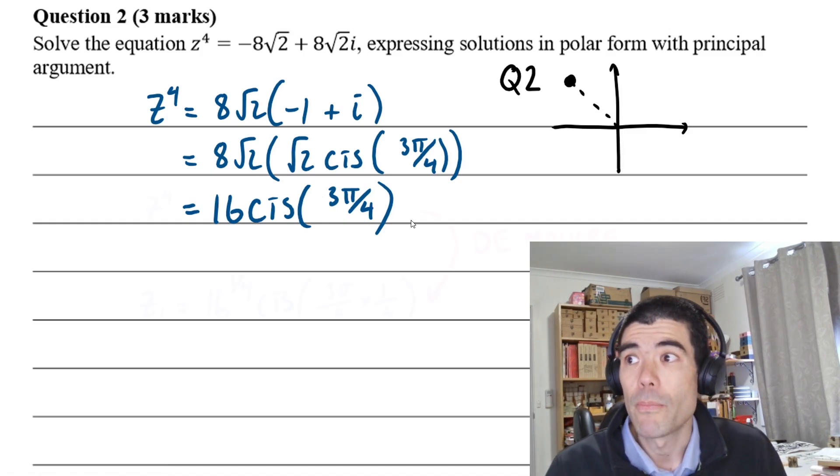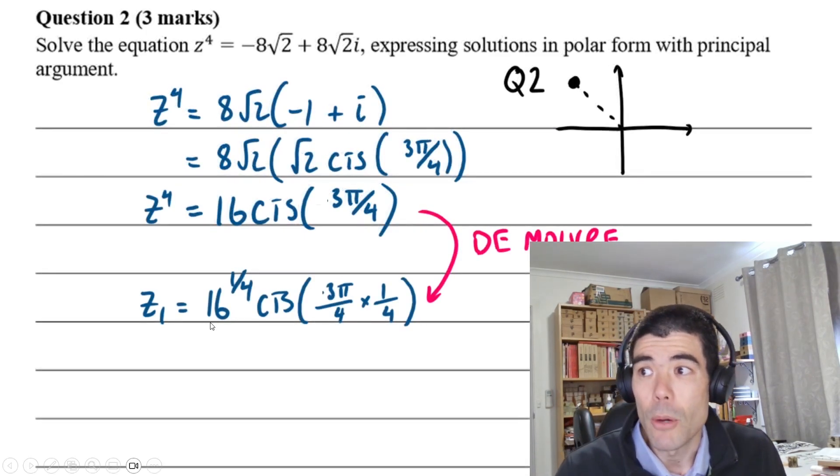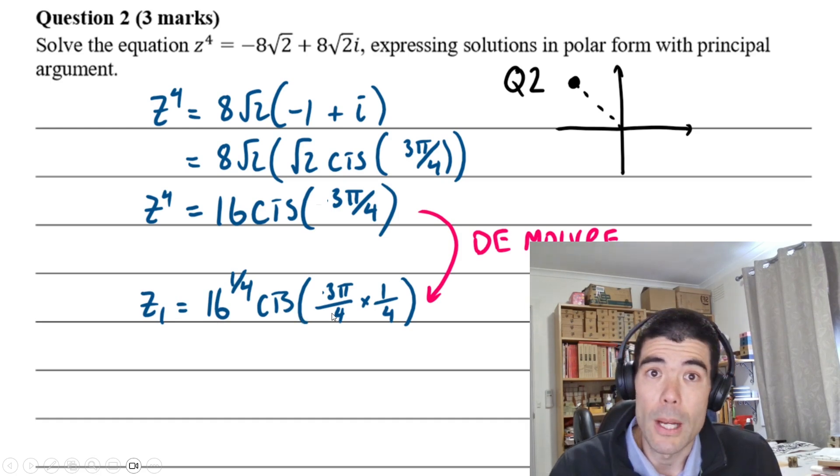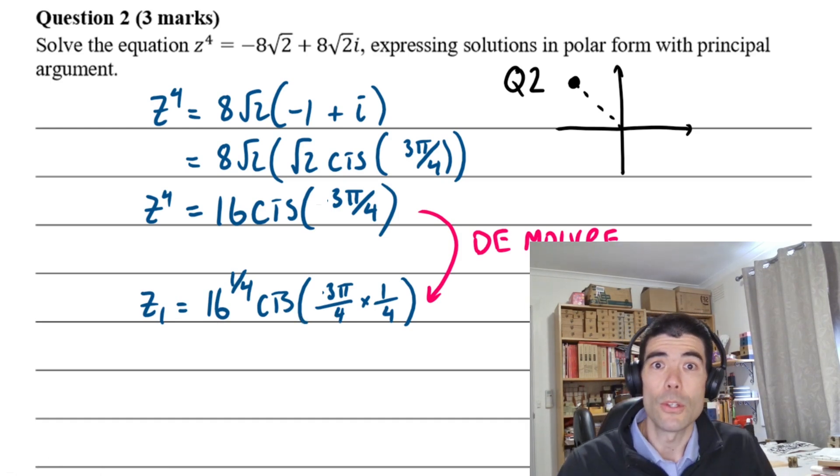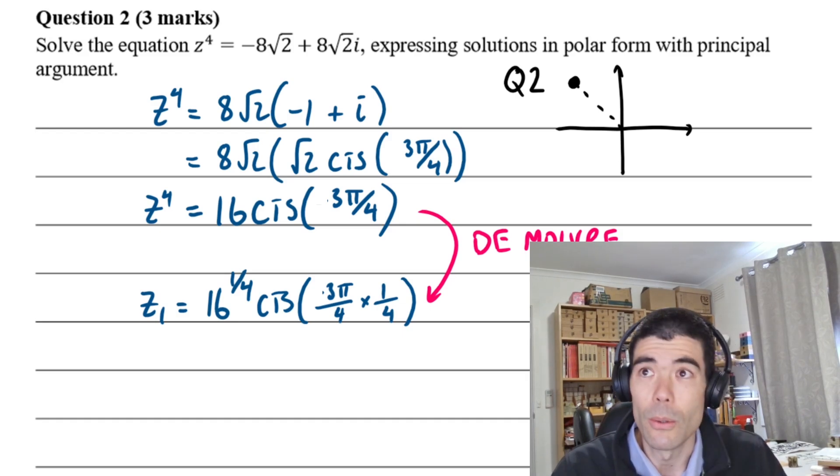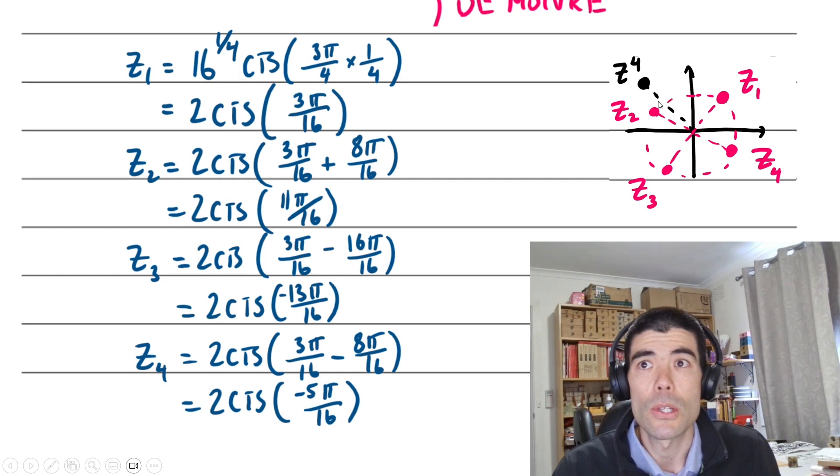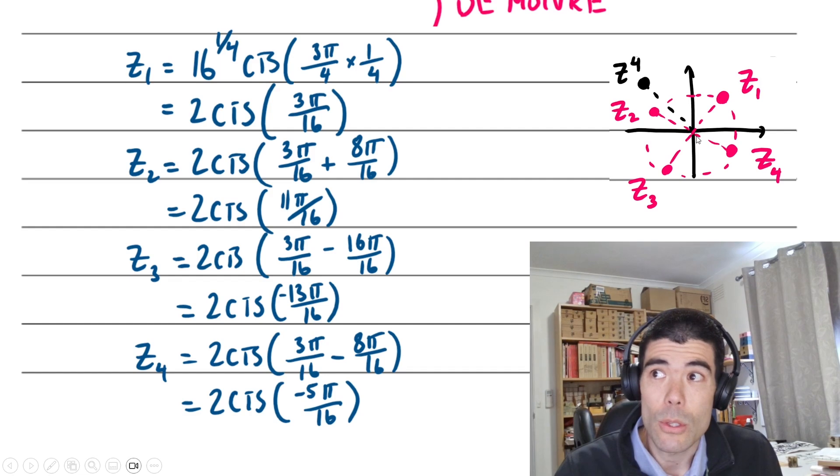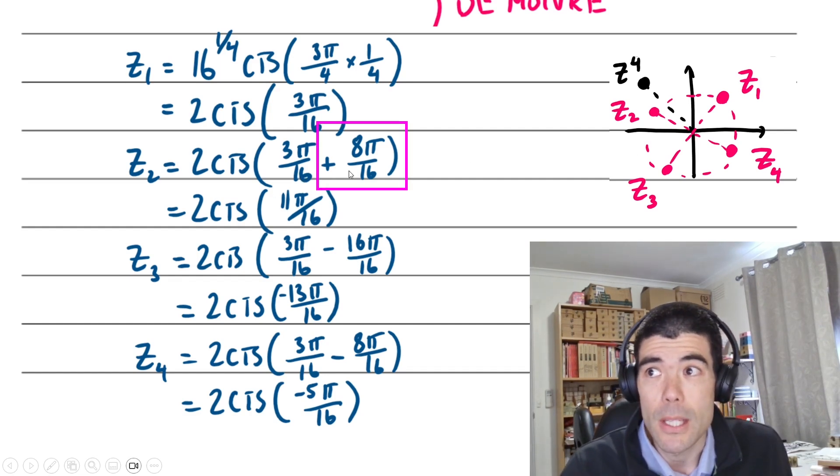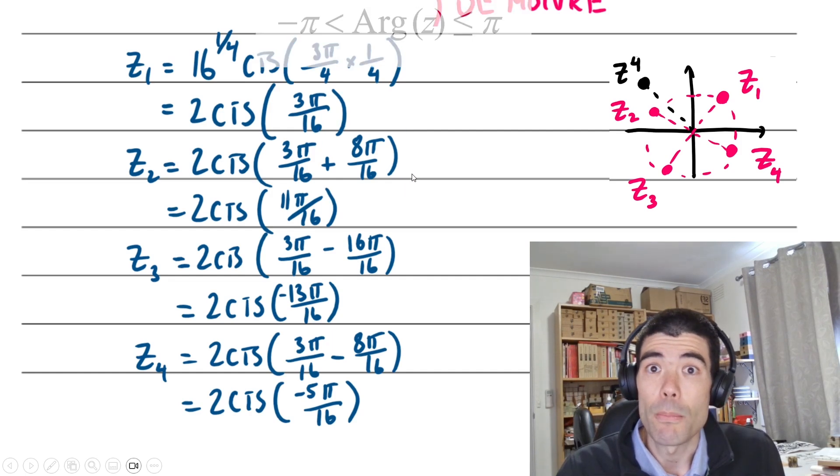This complex number z to the 4 is 16 cis 3π/4. Then we apply our theorem where we take the modulus to the power of 1/4. For the angle, we just divide by 4. This will give us our first solution: 2 cis 3π/16. But we're going to get four solutions equally spaced around the circle. Draw a little diagram and we can work out that each solution is π/2 apart from each other.